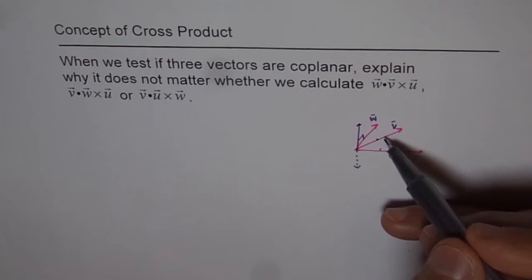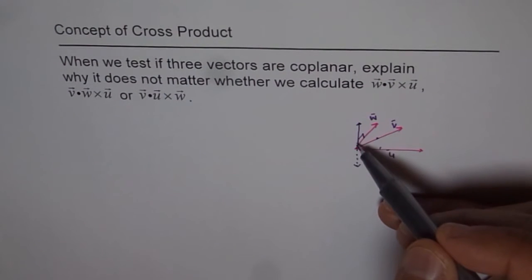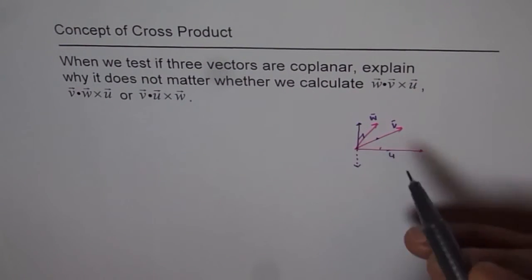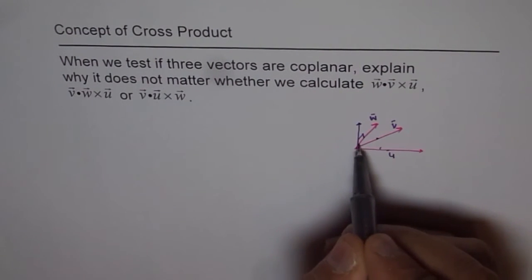If I would have performed v cross w, then also I would have got the vector normal to this page and that will be perpendicular to the third vector if that vector is coplanar.